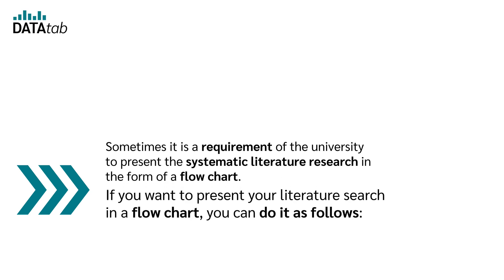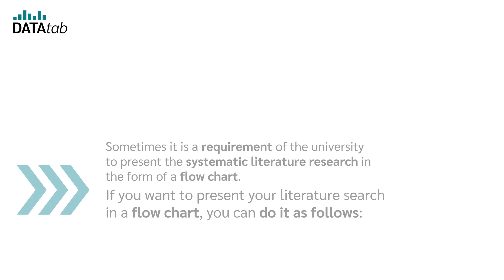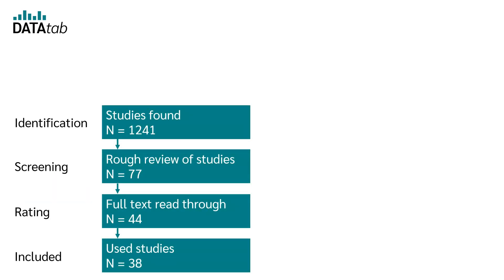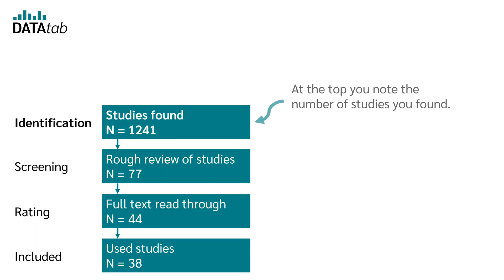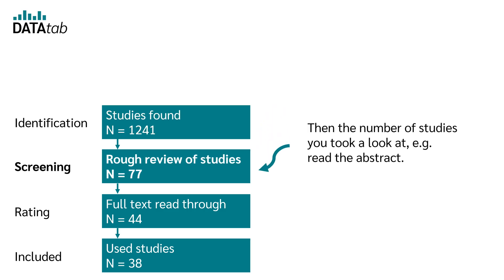If you want to present your literature search in a flowchart, you can do it as follows. Identification: at the top, you note the number of studies you found. Screening: then the number of studies you took a look at, for example, read the abstract.